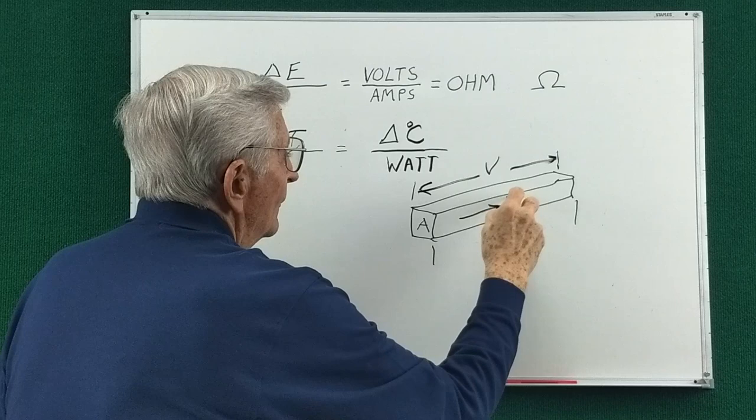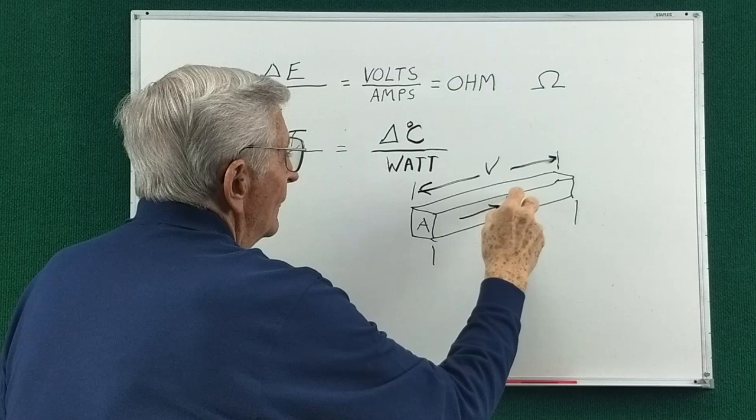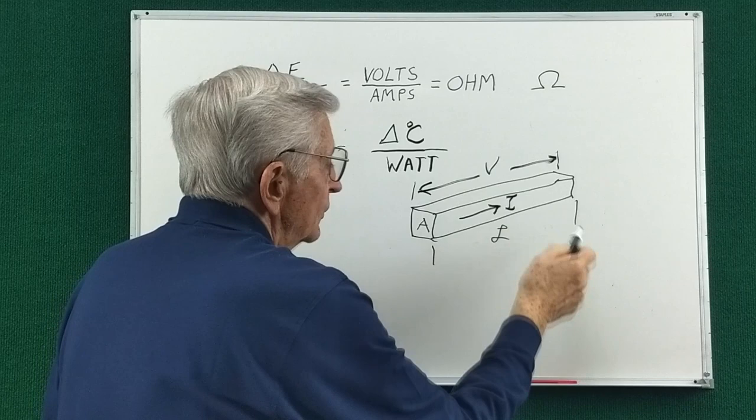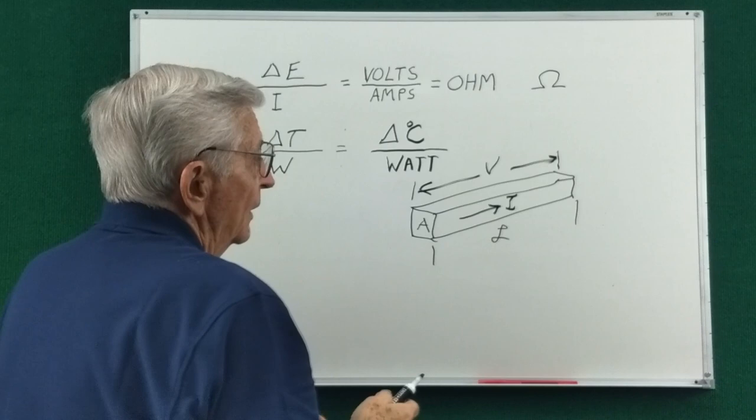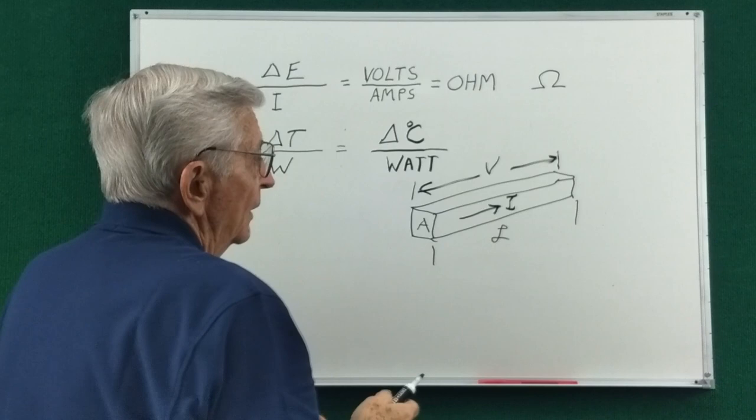Now for a given voltage between the ends, we'll have a given current flow. So that's a flow. Current is electrons per second. So this delta voltage causes a flow of electrons. Now electrons move very fast.